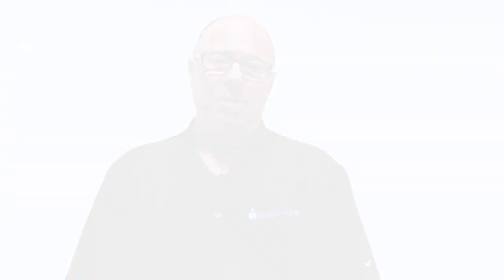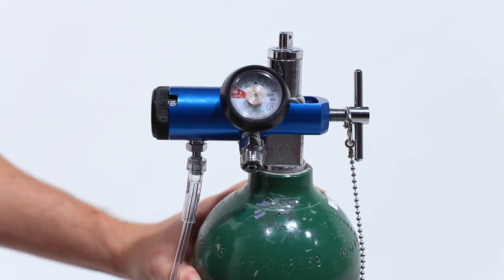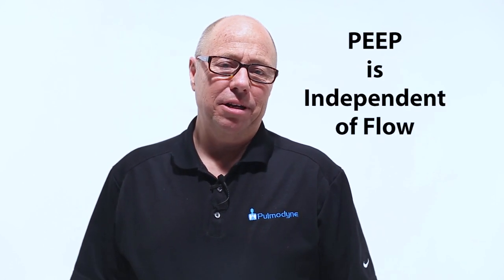So by now you're probably thinking, you really haven't told me anything that makes this different than what I'm currently using. Well, here you go. It simply connects to the low-pressure barb. You turn it to 10 liters per minute. You do not exceed 10 liters per minute. You set the PEEP and let it work. The PEEP is independent of the flow. You never have to adjust the flow to increase or decrease the PEEP pressure, which is the case in other devices.